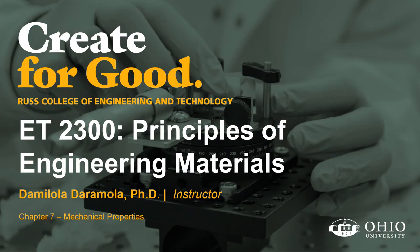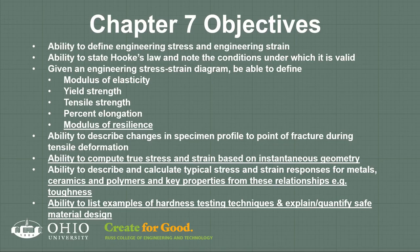This lecture is a continuation of our lectures on mechanical properties of materials. The objectives we're going to cover are the things underlined on today's slides. We already looked at how to calculate certain properties from a graph: modulus of elasticity, yield strength, and tensile strength. Today I want to cover modulus of resilience, percent elongation, and then the qualitative comparison between different kinds of properties from a graph.